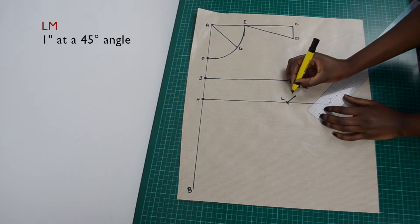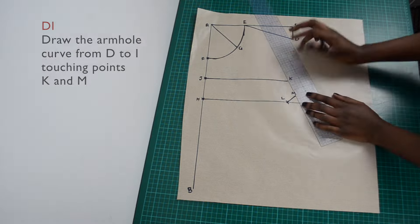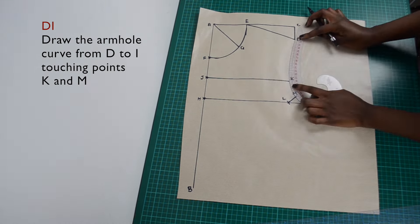Draw a 1 inch line from L to M at a 45 degree angle. Make sure your armhole curve is as smooth as possible.